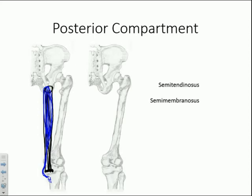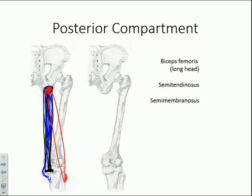On the lateral side, we have the long head of biceps femoris. It has the common origin point at the ischial tuberosity and attaches to the lateral surface on the head of the fibula, crossing to the lateral aspect of the leg.